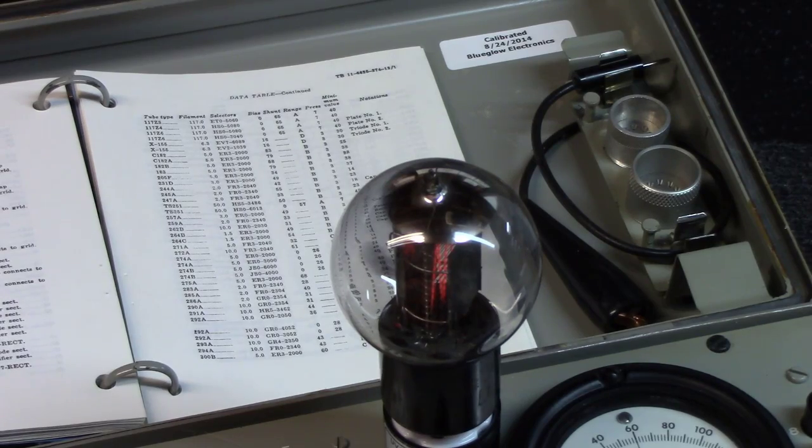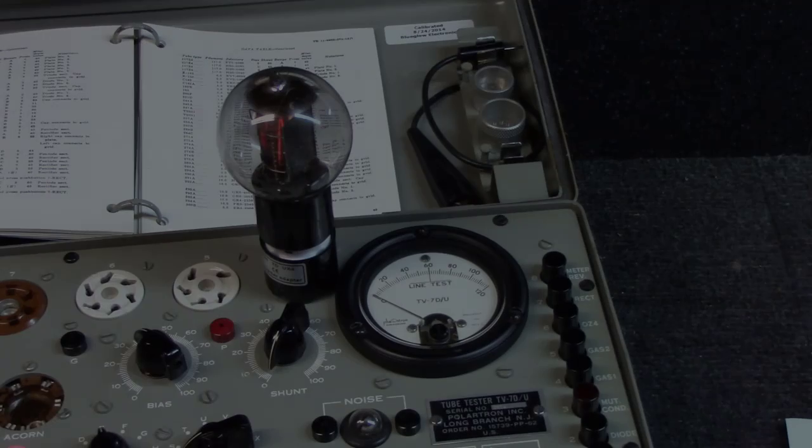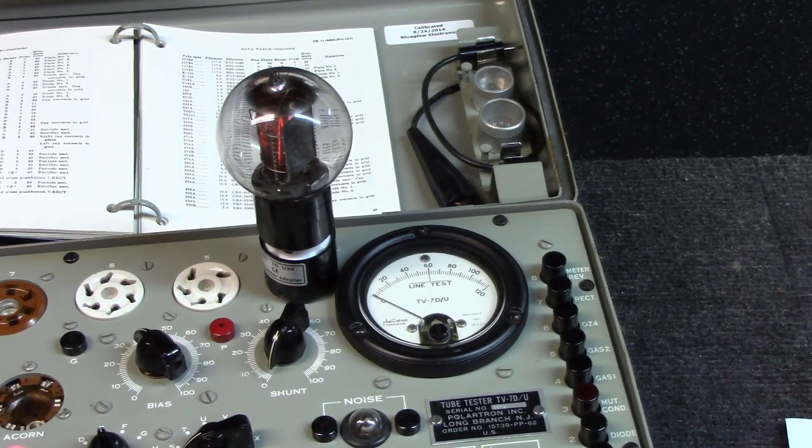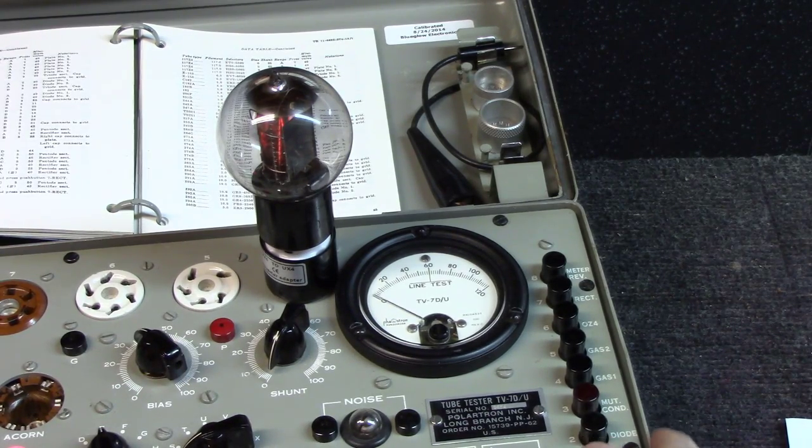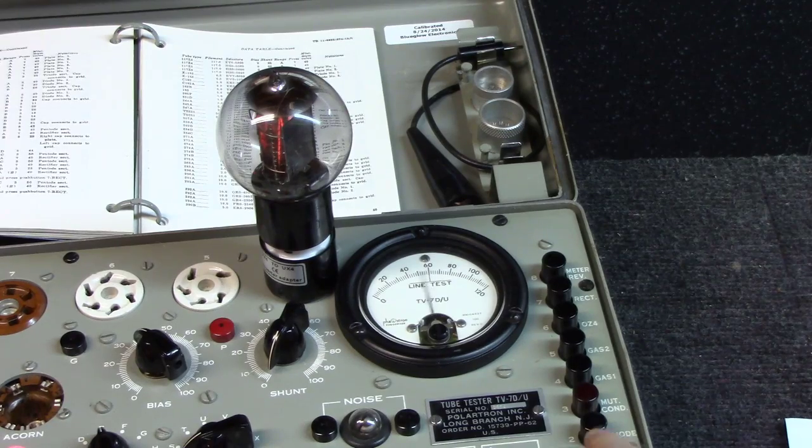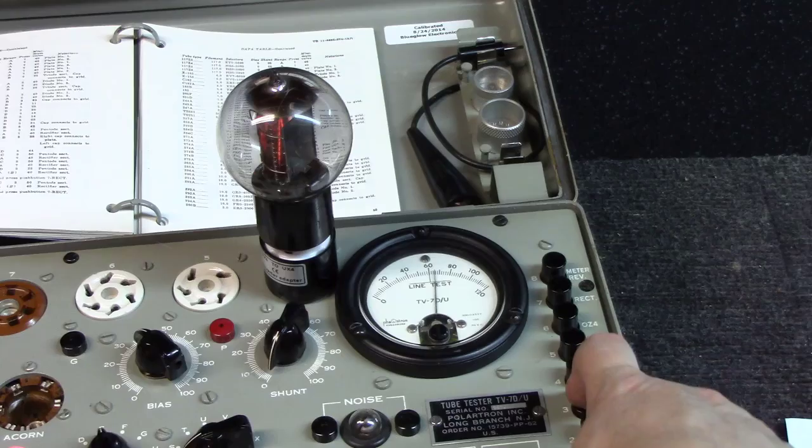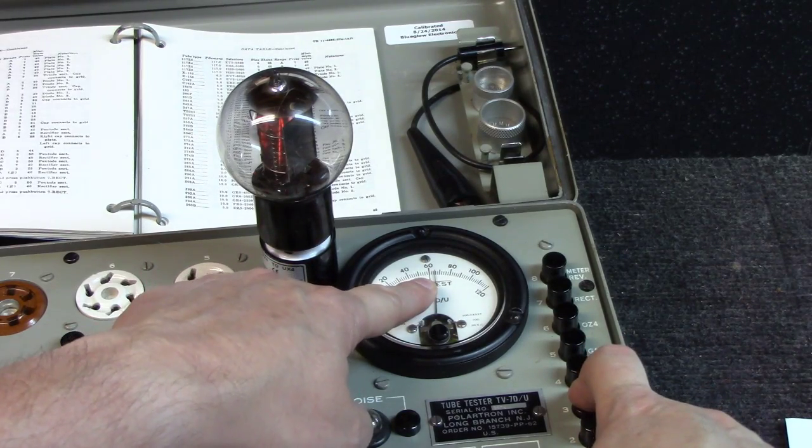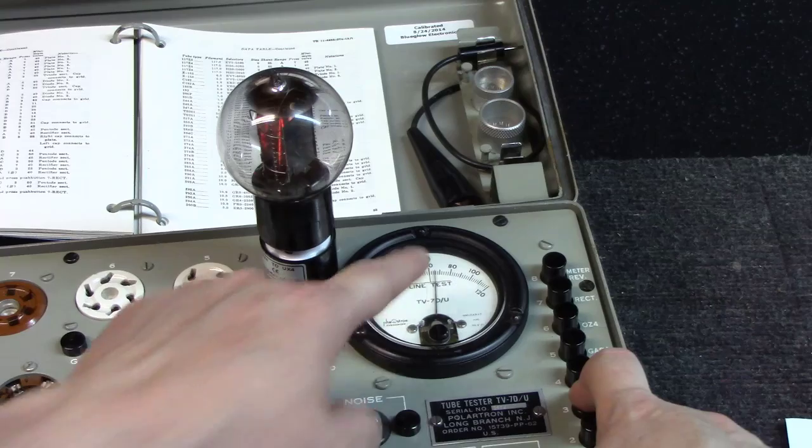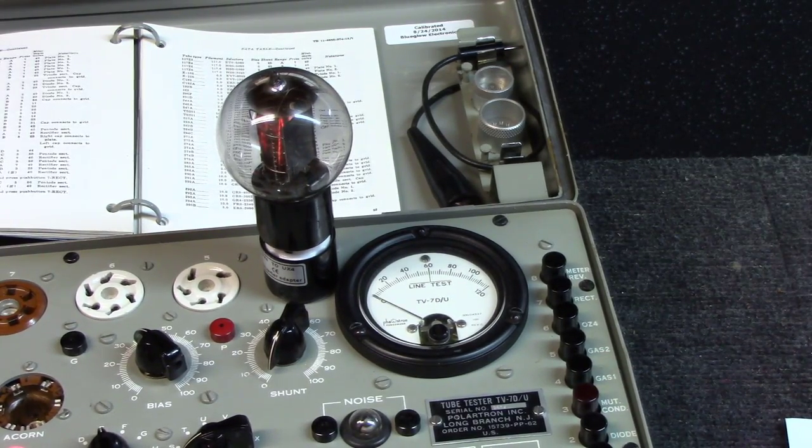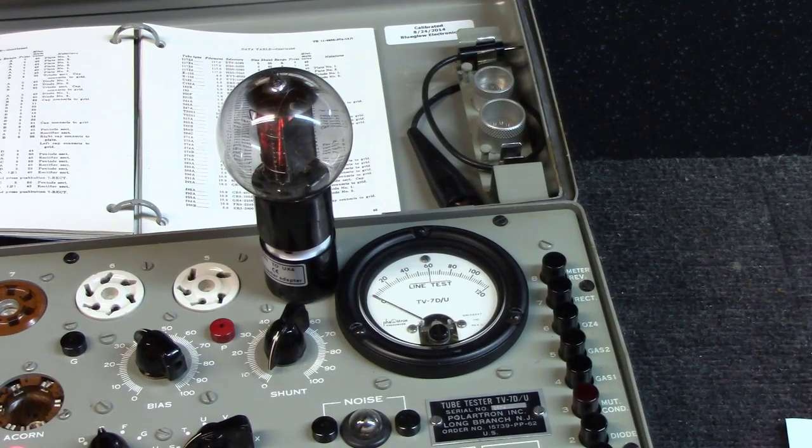All right, so it's nice and warmed up. I let it warm up for about 20 or 30 seconds here. I'll do one more push here of the line test, still in the middle. And at this point, I'm going to hit the three button, which is the continuity. And if you'll notice, this goes over to about 62, 64, 65. And the minimum is 37, so that tube is testing great, pretty much like a brand new tube at this point.